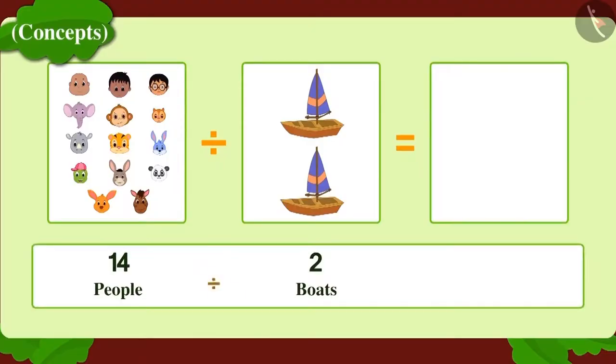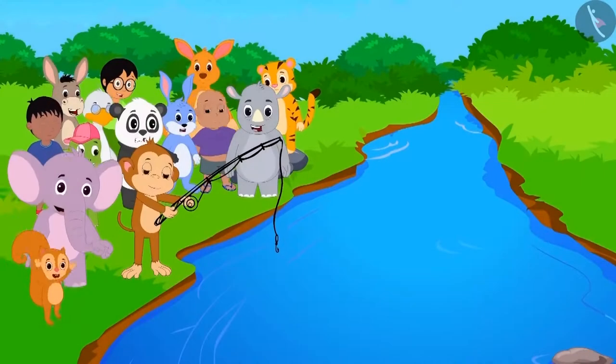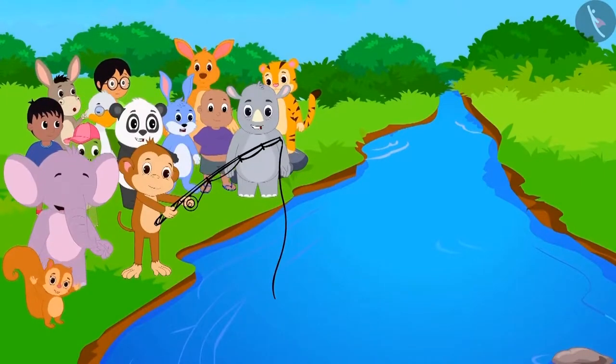Using division, Golu found that seven people could go in each boat.